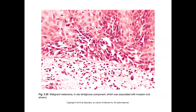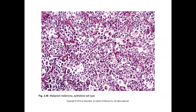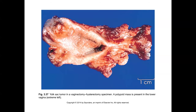Melanoma can also occur in the vagina, with many of the typical morphologic features helpful in recognition as elsewhere. An example of a more epithelioid type shows nested cells that are not very cohesive, with somewhat eccentrically placed nuclei and possibly cherry-red nucleoli.